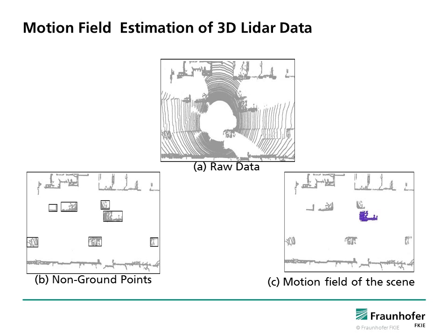Motion field estimation process is illustrated on real 3D LiDAR data. Figure A shows the raw LiDAR data. Figure B represents the non-ground measurements and potential moving objects in black boxes. Figure C shows the estimated motion field of the environment with purple regions.